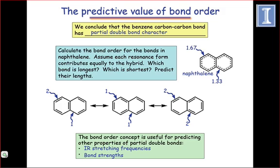By averaging the integral orders between two atoms in all of the resonant structures of a compound, we can compute a very accurate and predictive bond order.